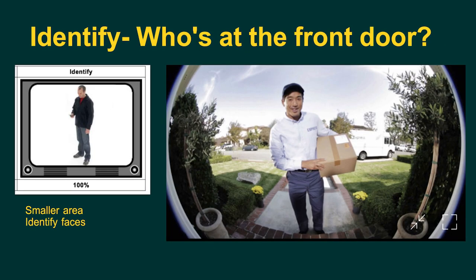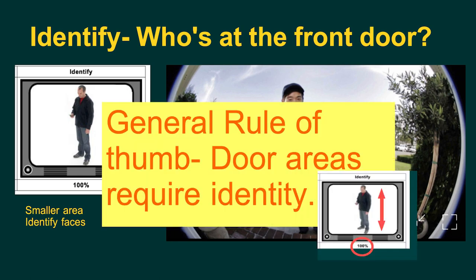However when someone approaches your front door, your goal becomes to identify the individual, so the proportion of their height in relation to the monitor length increases. Your goal is to identify who's at the front door. A general rule of thumb is that any entry or exit areas you want to be able to identify — so for a front door you'd want the camera right next to it, hence the popularity of front doorbell cameras.